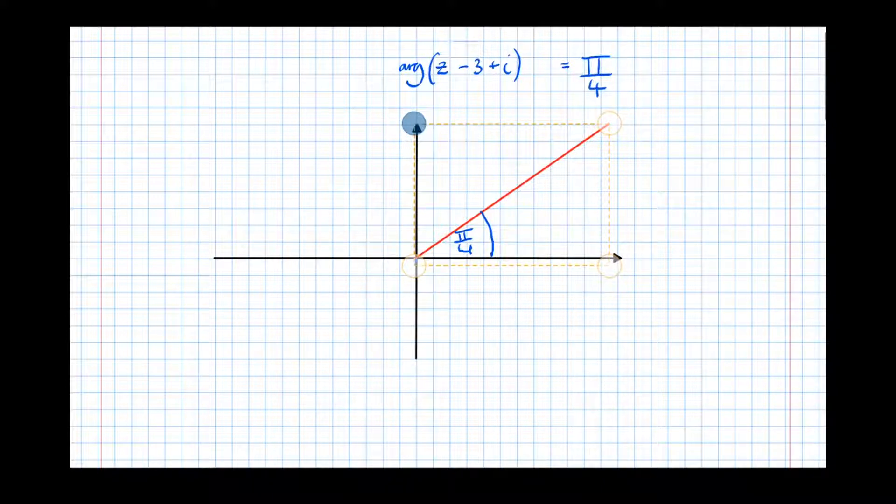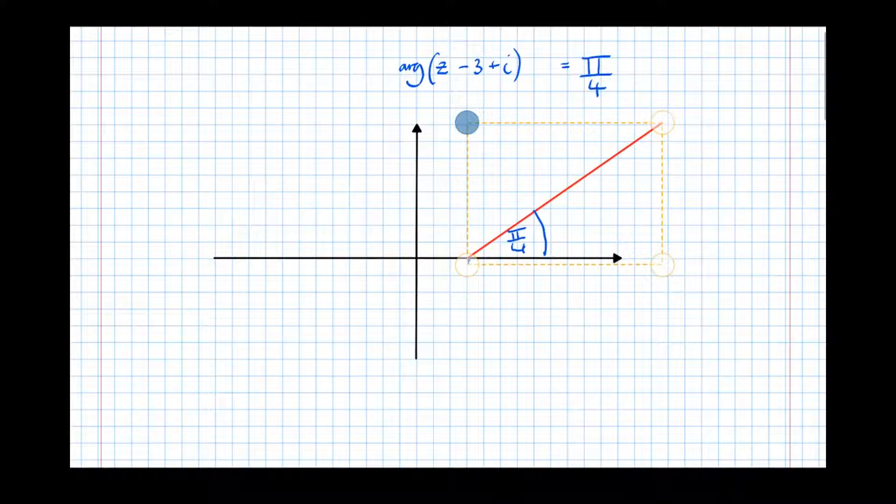Instead of taking 3 in the real direction, we're going to add 3—we're going to translate it 1, 2, 3 in the positive real direction. And instead of adding 1 in the imaginary direction, because it's happening inside the bracket, we're going to subtract 1 like that. So what we need to do is label all the key points.